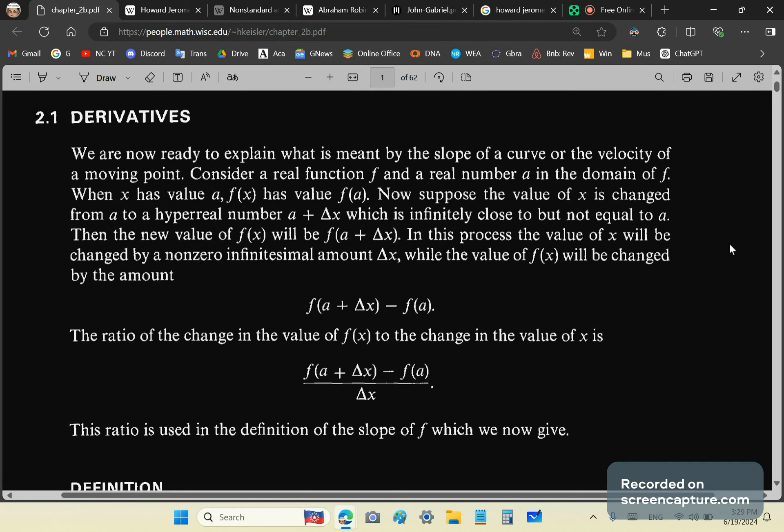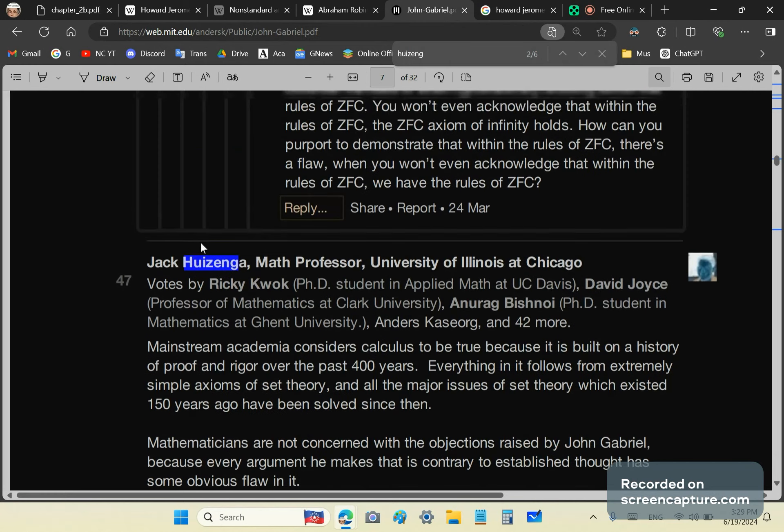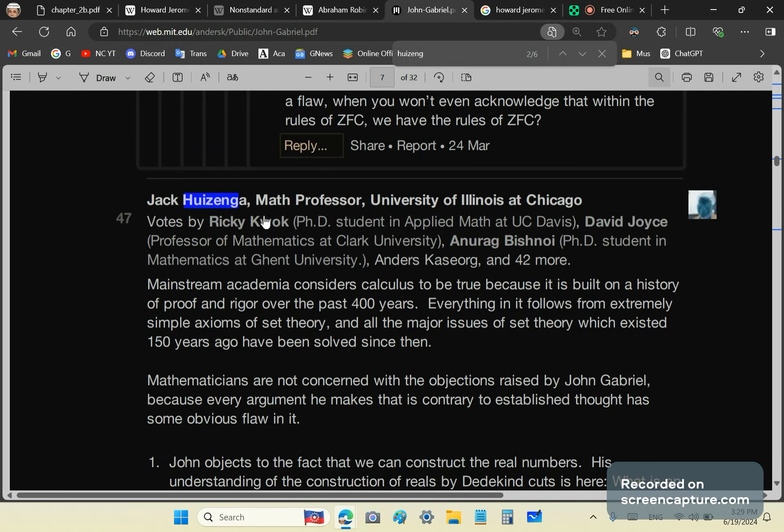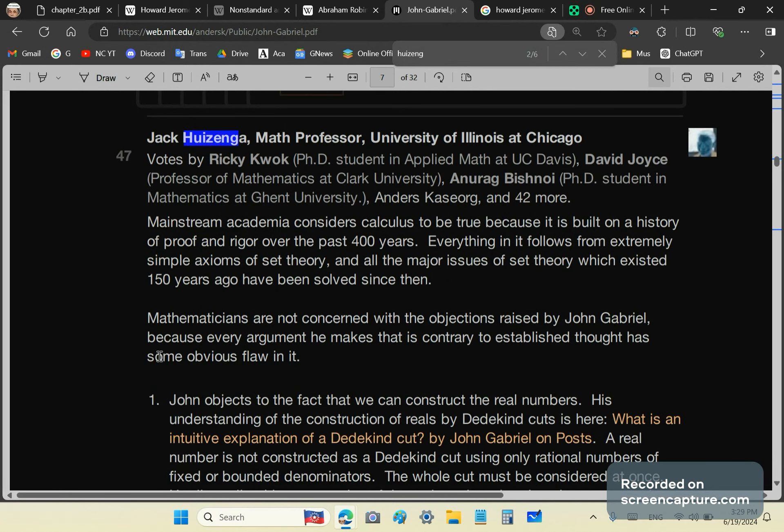But what I want to show you also, people, from this textbook is that contrary to what you were told by those fucking bastards like Professor Jack Eisinger and others on this crap site Quora, mathematics academia may consider calculus to be true and to be based on proof and rigor over the past 400 years. But that's absolutely false.